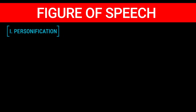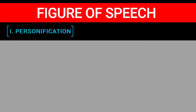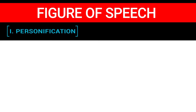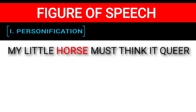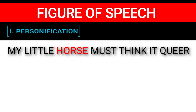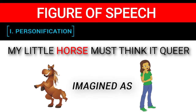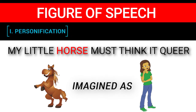There are five figures of speech used in the poem. First of all we will see personification. Personification is investing non-living things with human qualities. We can see it from the poem line: 'My little horse must think it queer.' Here, the horse is imagined as a human being.